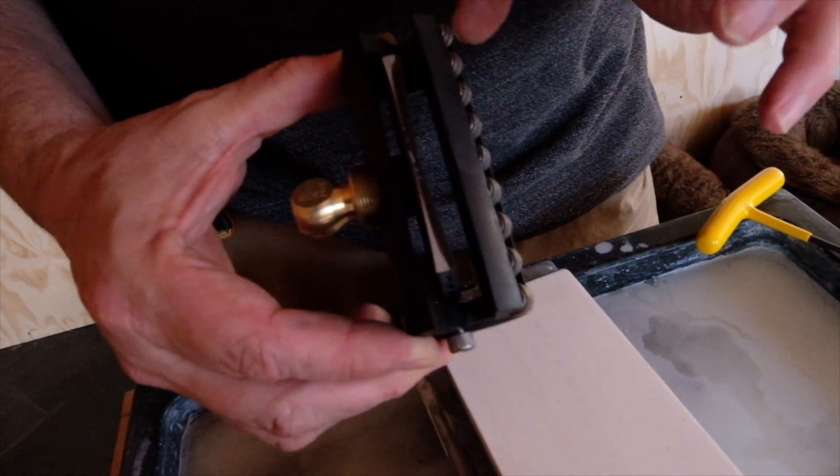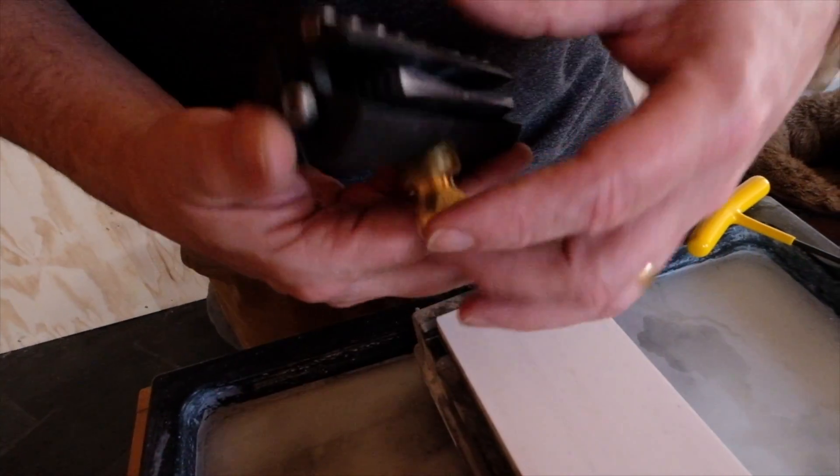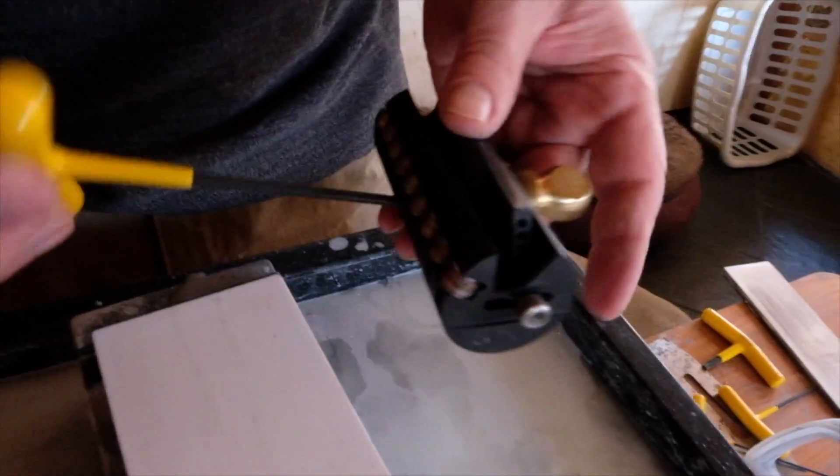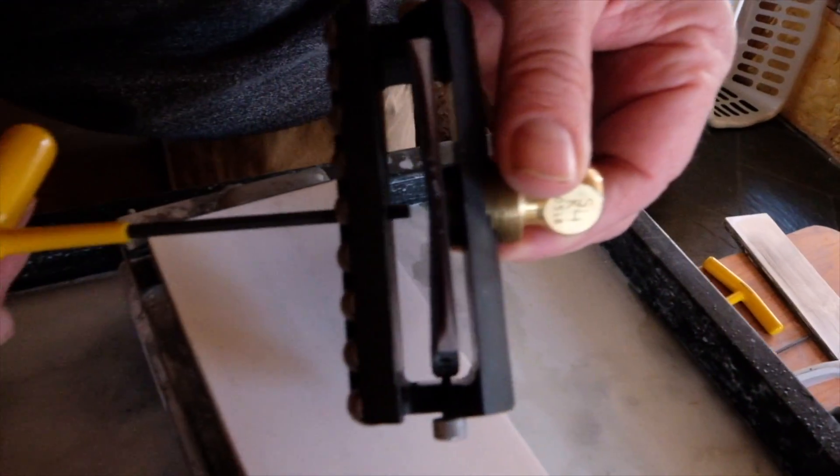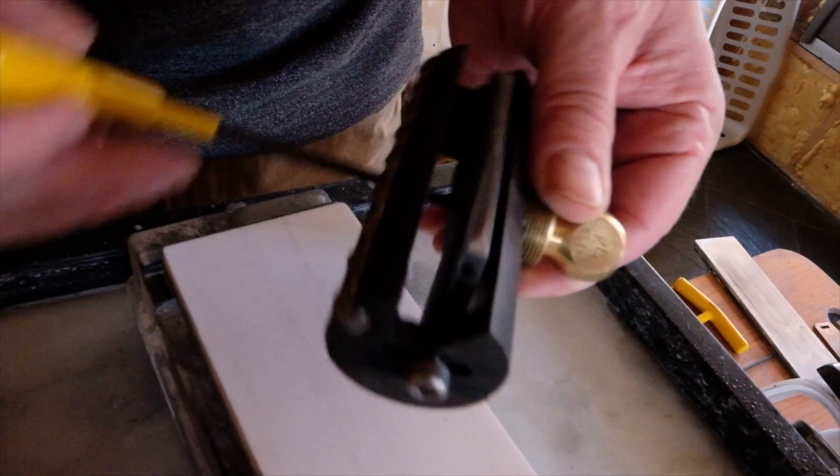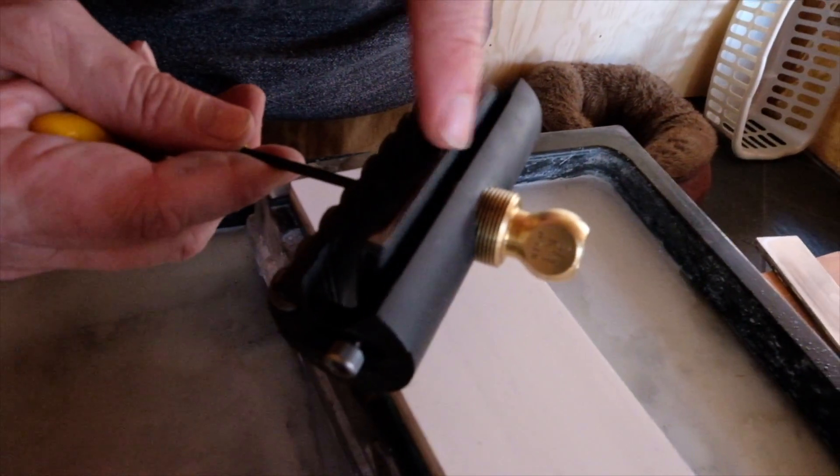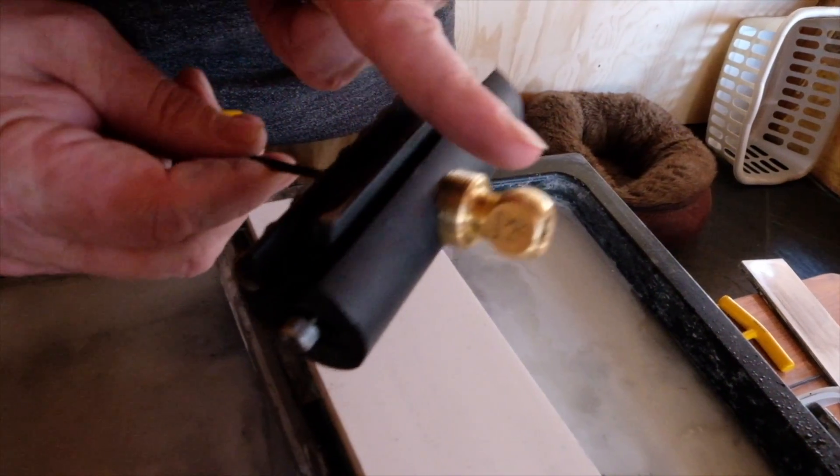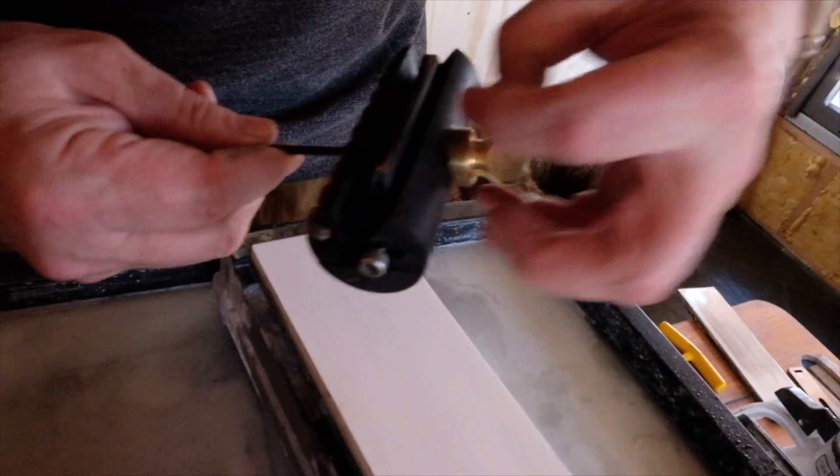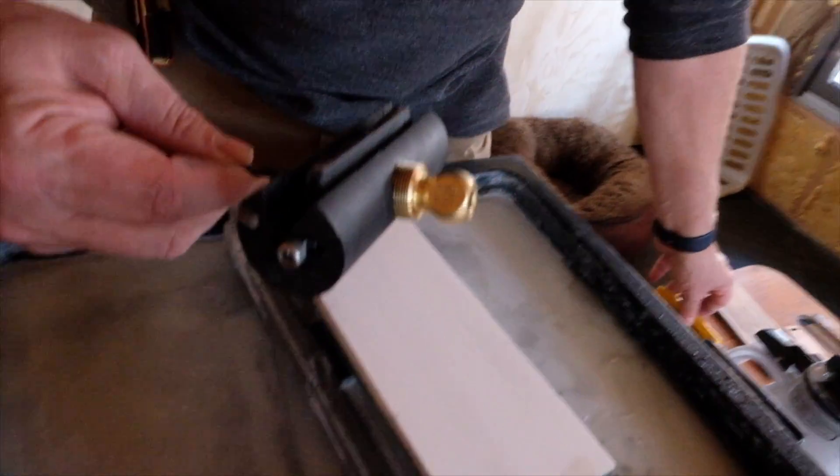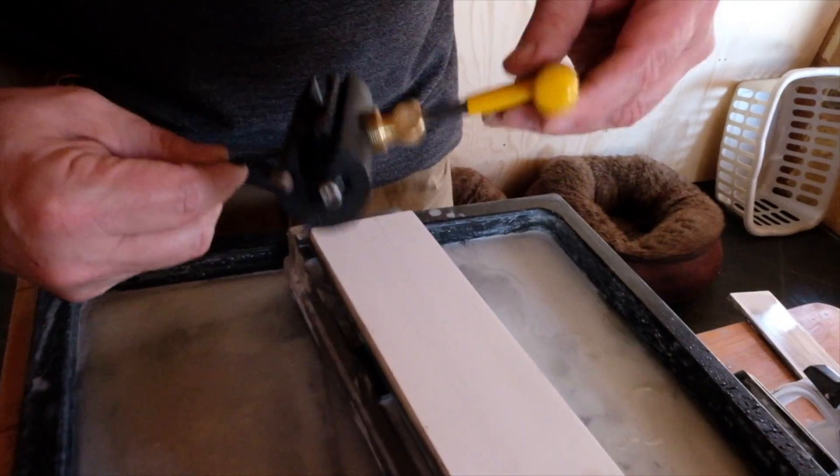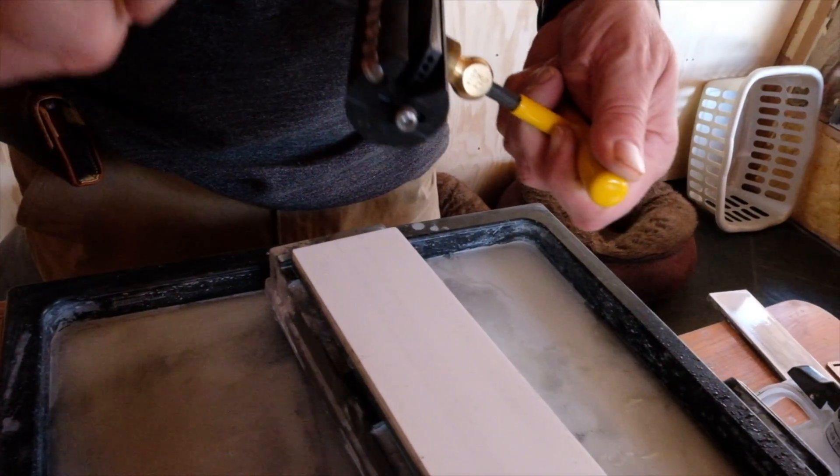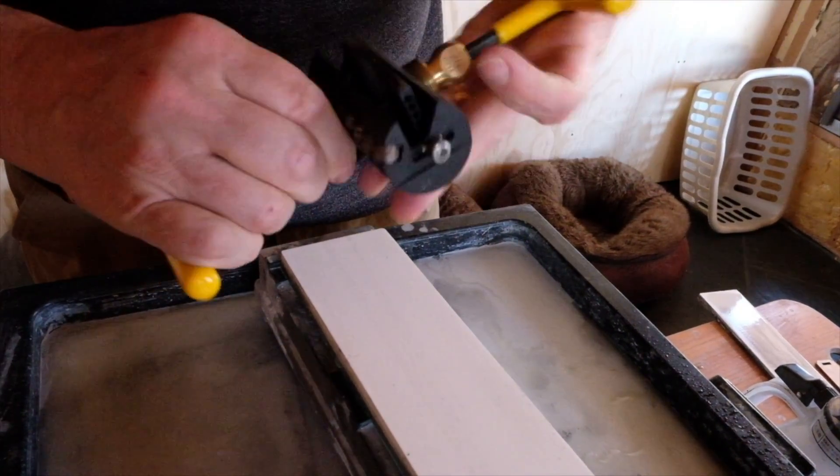So I'm going to take an Allen wrench and slide it right through into the bottom of the hone plate where the retaining screw goes up into the bottom of the head screw. And I'm just going to loosen that about half a turn to begin with.